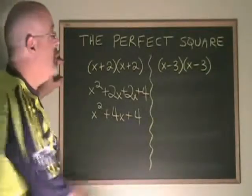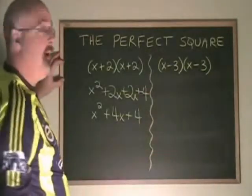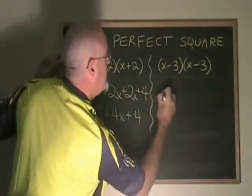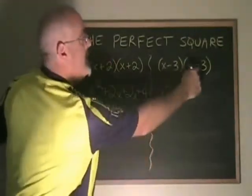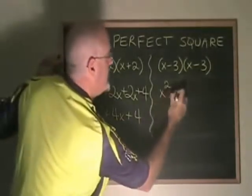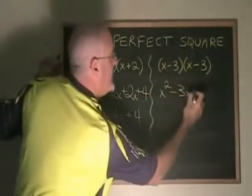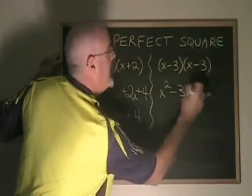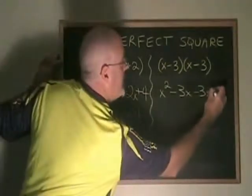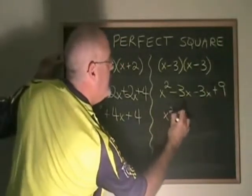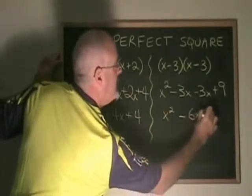Does it work the same way when you have a minus sign in the binomial? Using the FOIL in this example, x times x is x squared, x times negative 3 is negative 3x, negative 3 times x is another negative 3x, and negative 3 times negative 3 is positive 9. Simplifying, we have x squared minus 6x plus 9.